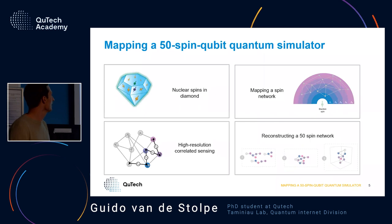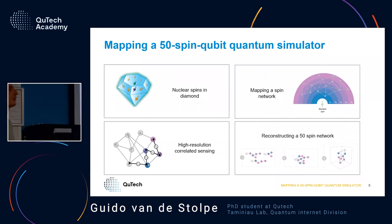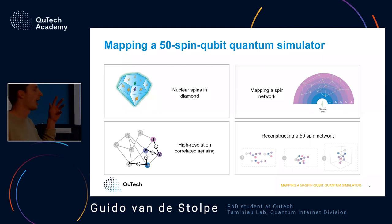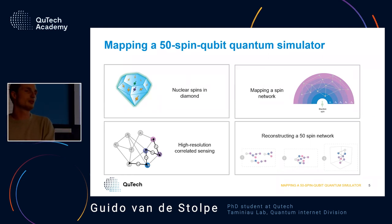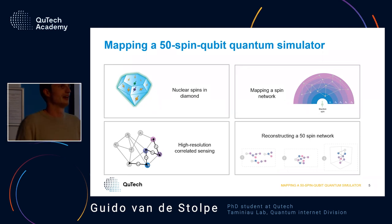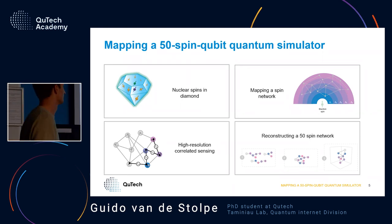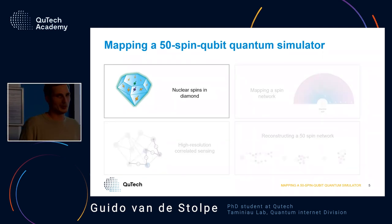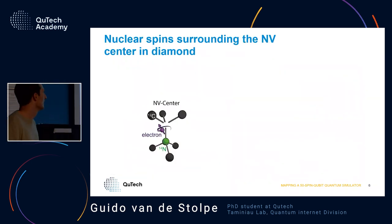I want to explain how we get to these 50 qubits. There are four topics in my work: nuclear spins in diamond, how we map a spin network, why we even want to do that, the techniques we developed for that, and then reconstructing this 50-spin network with a small outlook on how we want to use it for quantum simulation.